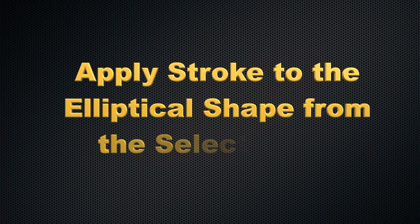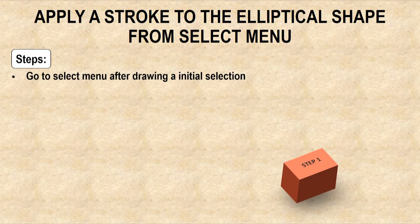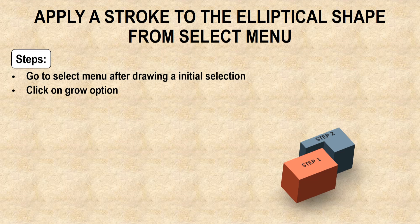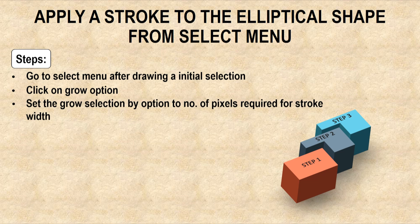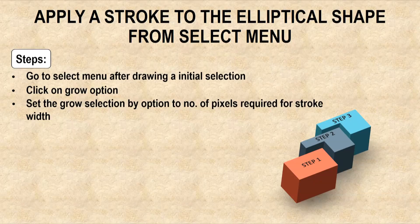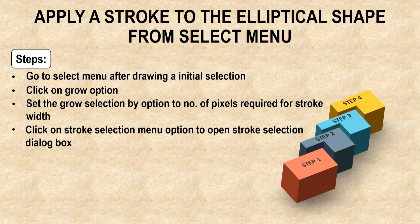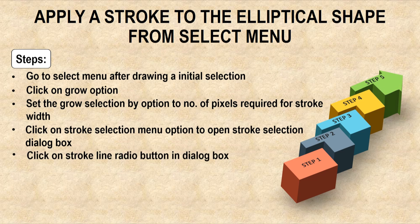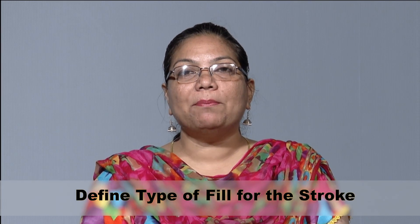We can also apply a stroke to the elliptical shape from the select menu. For this purpose, go to the select menu after drawing the initial selection and choose the option grow. Set the grow selection by option to the number of pixels required for stroke width, then click OK in the grow selection dialog box. Finally, go to the edit menu and follow the same steps as for applying foreground or background color. There is also a stroke selection menu option from which we can set the stroke line width and define the type of fill for the stroke, like solid color or pattern.